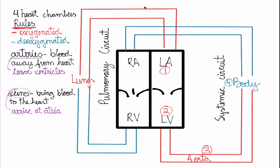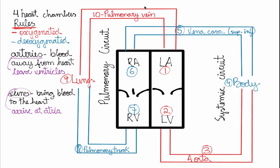From the aorta we go to number four, the body. The body returns blood via number five, the superior or inferior vena cava, which takes it to number six, the right atrium. The right atrium pumps into number seven, the right ventricle, which pumps into the pulmonary trunk — an artery that bifurcates, carrying deoxygenated blood to number nine, the lungs. Blood then returns to the left atrium via number ten, the pulmonary vein, and the circuit begins again.